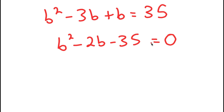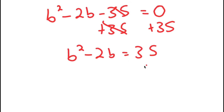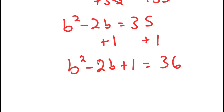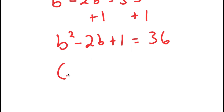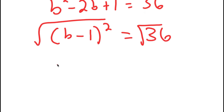Now from here, actually before doing that, what I'm going to do is add one on both sides. So now I have B squared minus two B plus one is equal to 36. And the reason I did that is because B squared minus two B plus one is the same thing as (B minus one) squared. And now I can take the square root on both sides because the square root of 36 is a whole number. So I get B minus one is equal to positive or negative six.